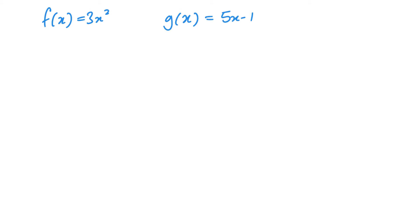Same functions. I've just gone to the new page. Let's look at it the other way around. Say gf of 2. So for this, I'd have to find f of 2 first. So 3 lots of 2 squared. 2 squared is 4, times by 3 is 12. So this is the same as now g of 12. So it's 5 lots of 12 minus 1. 5 twelves are 60, minus by 1, 59.